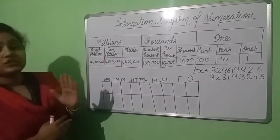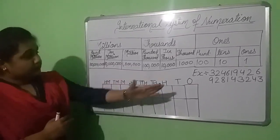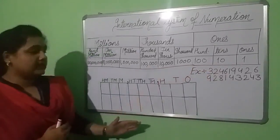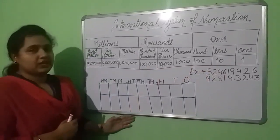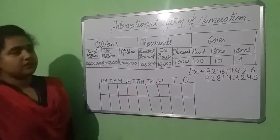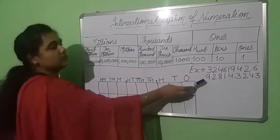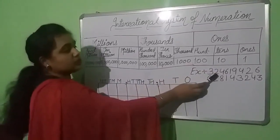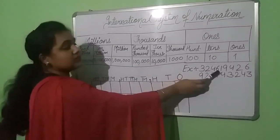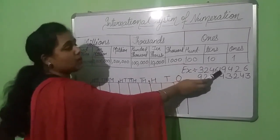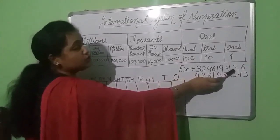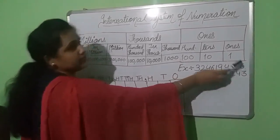And let's place these numbers in this place value chart. The very first number is 3, 2, 4, 6, 1, 9, 4, 2, 6.